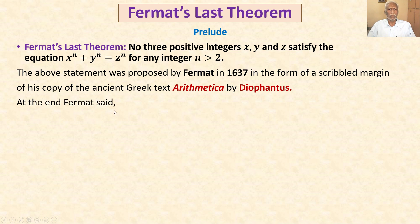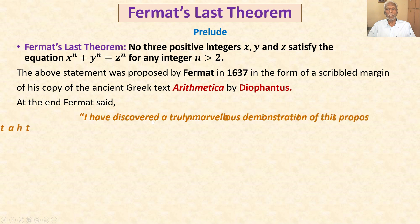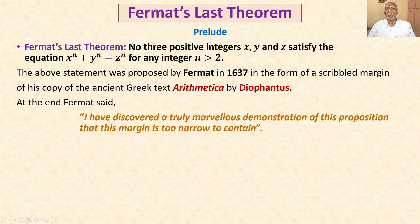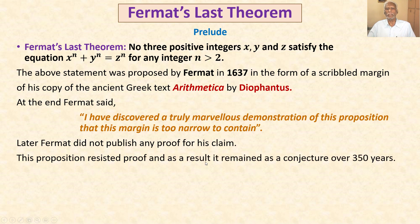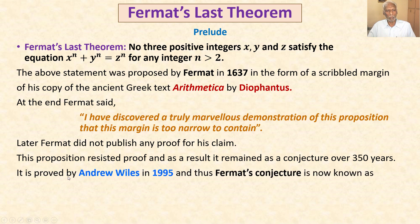At the end, Fermat said, 'I have discovered a truly marvellous demonstration of this proposition that this margin is too narrow to contain.' He claimed to have a marvellous proof, but later Fermat did not publish any proof. This proposition resisted proof and remained as a conjecture for over 350 years. It was finally proved by Andrew Wiles in 1995, and thus Fermat's conjecture is now known as Fermat's last theorem.